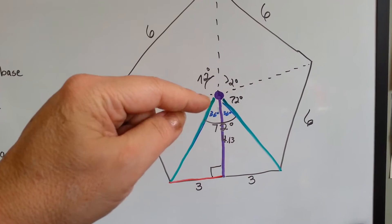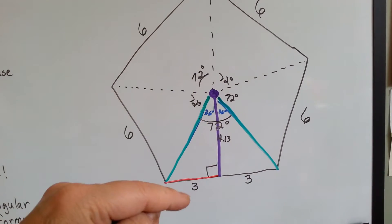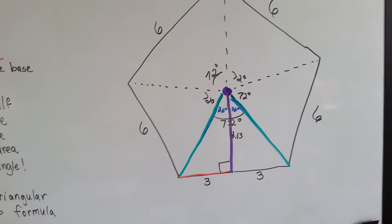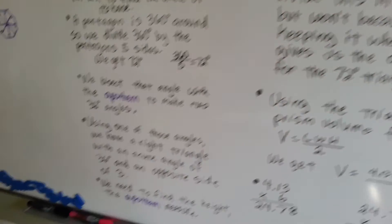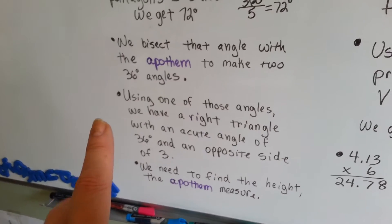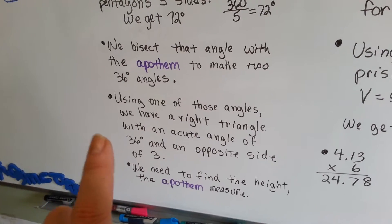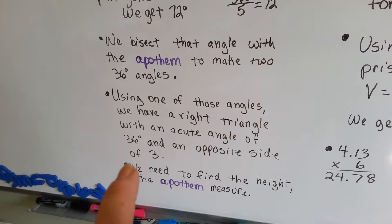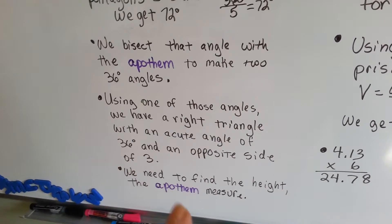Thinking trig-wise, we now have an acute angle and an opposite. We're just looking for the adjacent. Using one of those 36 degree angles, we have a right triangle with an acute angle of 36 degrees and an opposite side of 3. We need to find the height of the apothem measure.